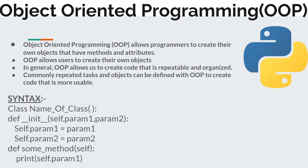The syntax for object-oriented programming uses the class keyword followed by the name of the class. Next we are defining a method which is __init__, which is an instance of that actual object, and in the brackets we are mentioning the attributes.